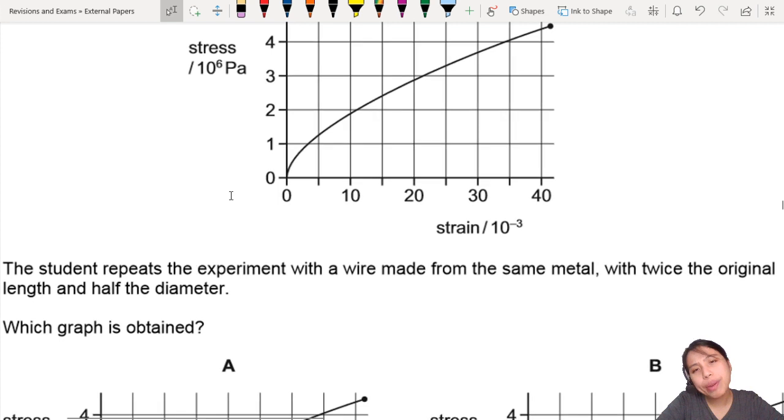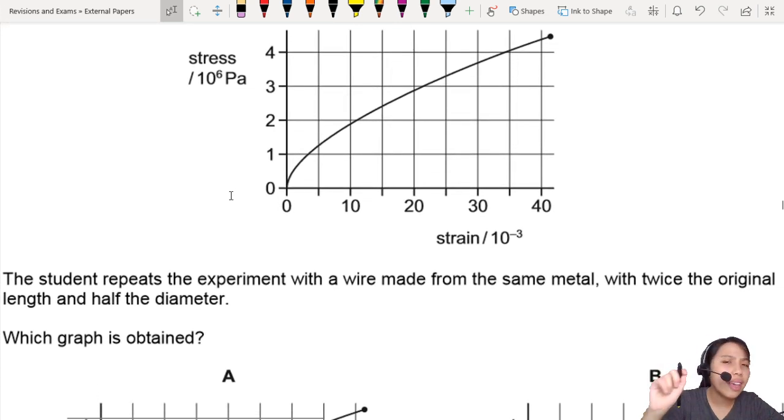Then this student repeats the experiment with a wire of the same metal. My, my, my. Okay, same metal, twice the original length, half the diameter. So 2L and half diameter, I guess. You can write it that way.